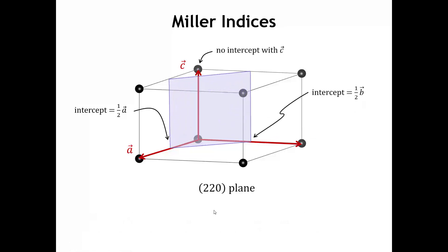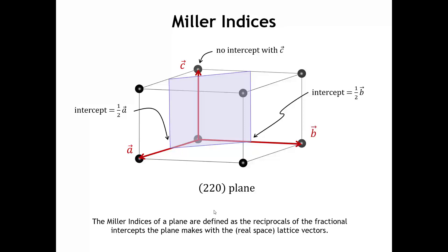Sometimes we have planes that are parallel to one or more of the lattice vectors, in which case they don't have an intercept. Here we see the two-two-zero plane, which has an intercept of one-half with A and one-half with B. Because it's parallel to the C lattice vector, it doesn't have an intercept with C — we say its intercept is infinity, and the reciprocal of infinity is zero. That's how we get the two-two-zero Miller indices.